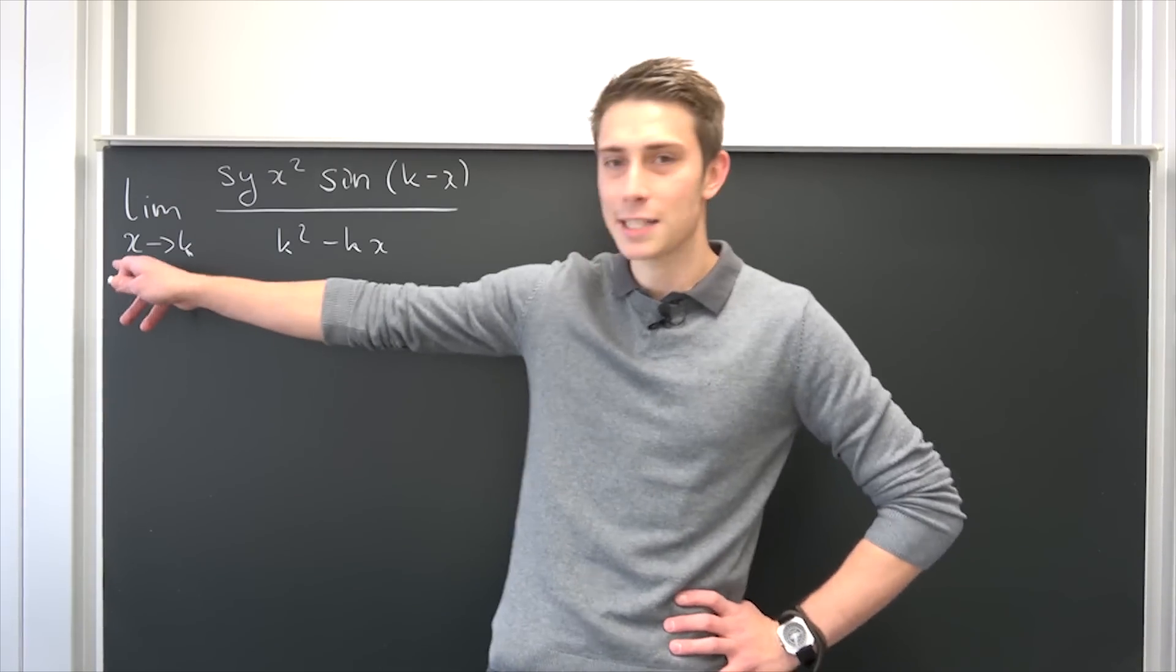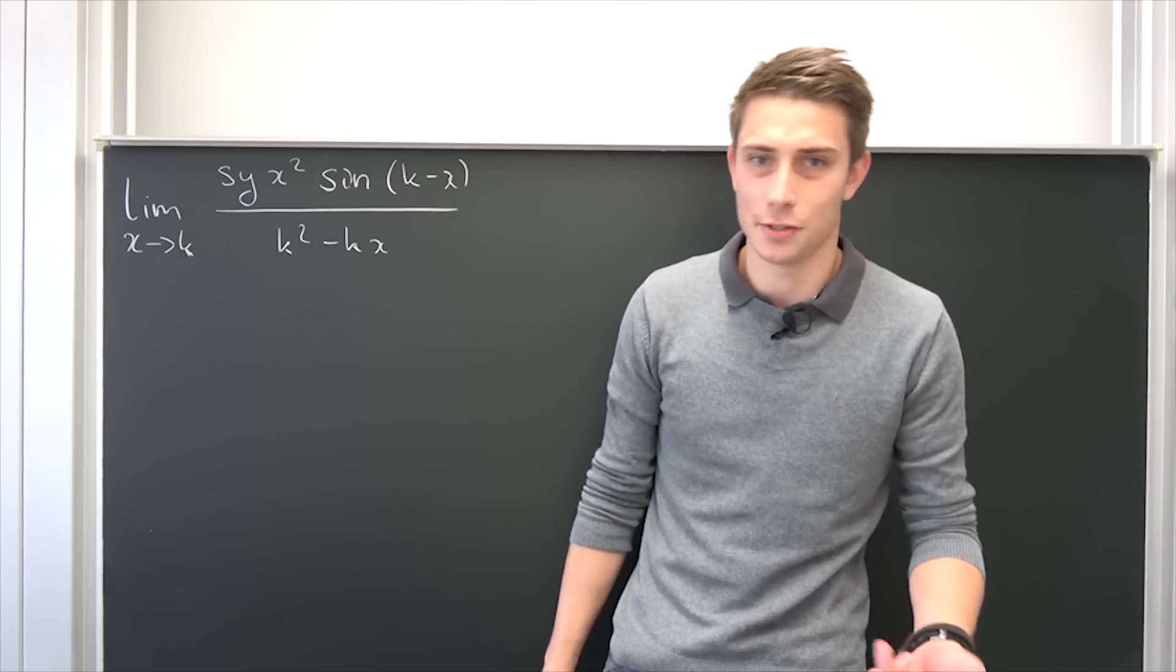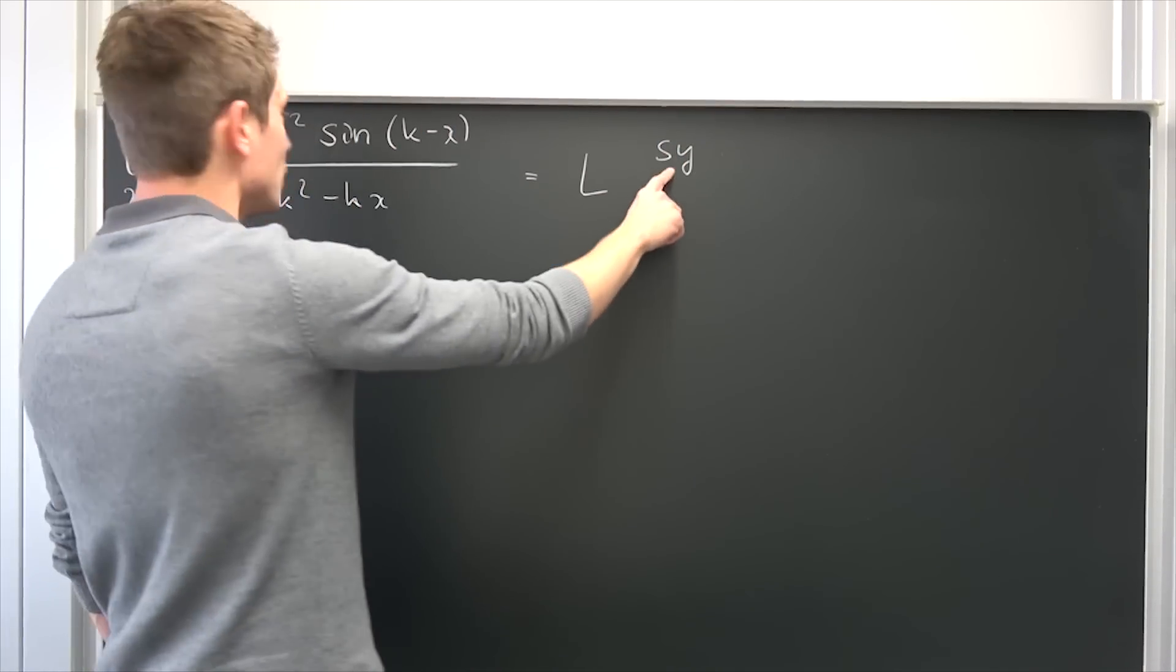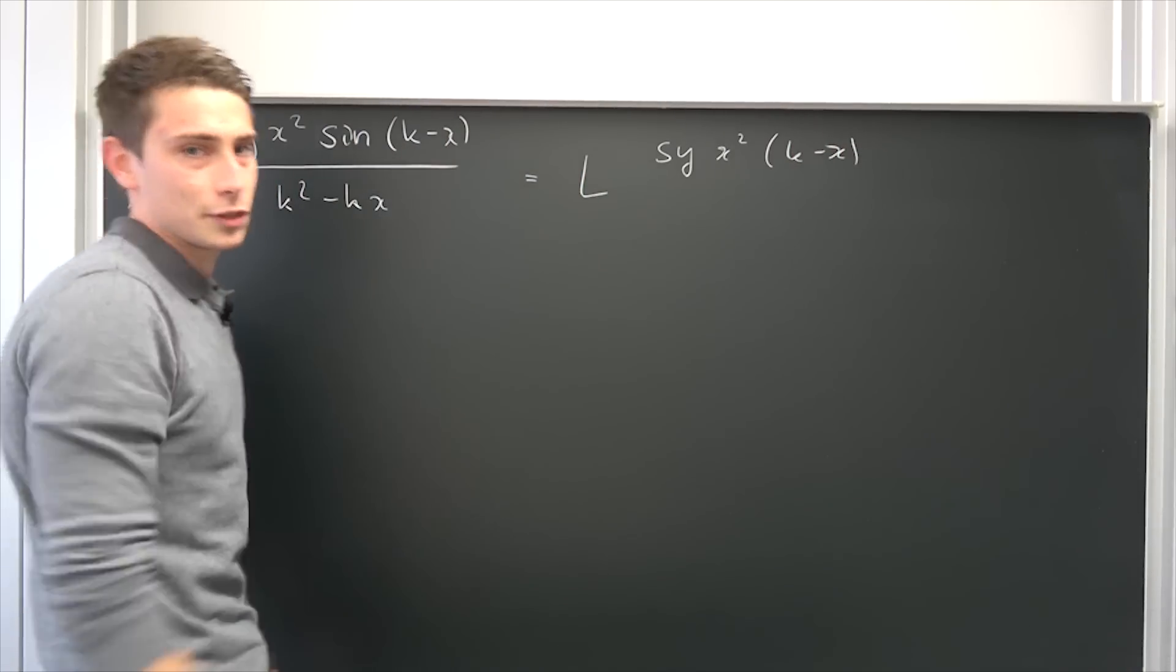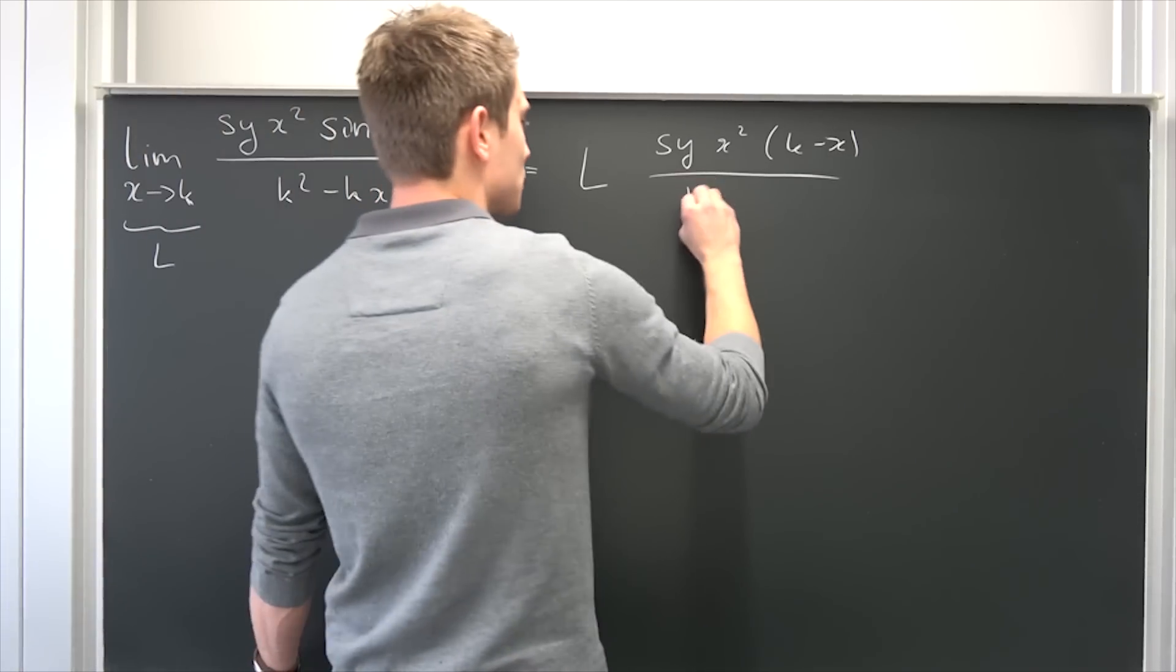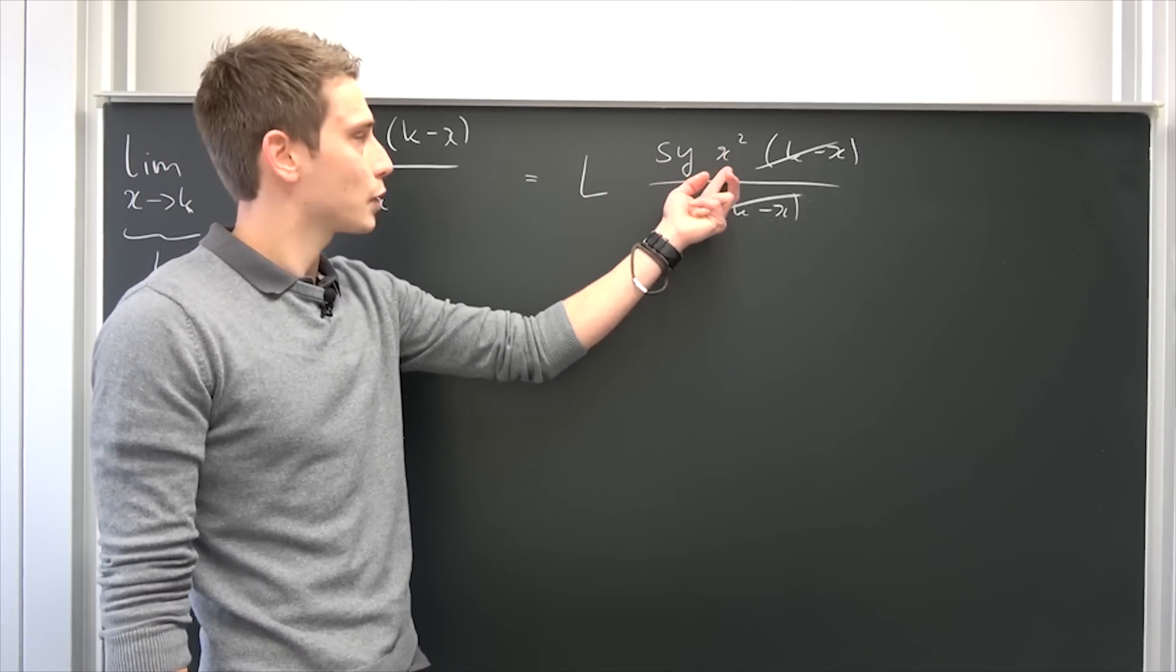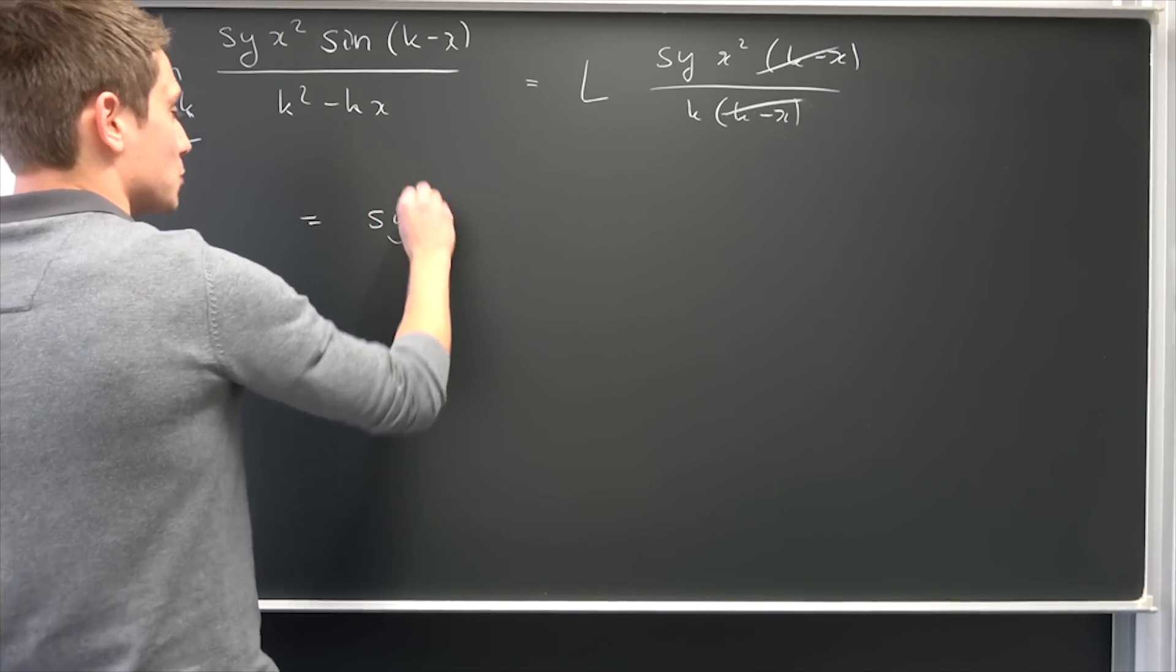That wasn't even meant as a joke. So you see here when x approaches k, we are going to end up with a really small value of the sine. So why not just approximate it using small angles? I'm going to refer to this limit right here at the moment as just capital L. We have L equals s times y times x squared times sine of k minus x, over k squared minus k times x in the denominator. Dividing by, we can factor out this k, so k times k minus x. The small angle approximation cancels this out, and now we can safely approach k as the limit. We have s times y k squared over k, with the k canceling out in the end. So we end up with the limit being just s times y times k.